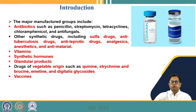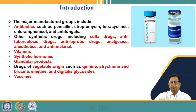The major groups manufactured include antibiotics such as penicillin, streptomycin, tetracycline, chloramphenicol, and antifungals. Other synthetic drugs include sulfa drugs, anti-tuberculosis drugs, anti-leprotics, analgesics, anesthetics, and anti-malarial drugs. These synthetic drugs are not manufactured from microorganisms or fermentation — they are produced using chemical processes.